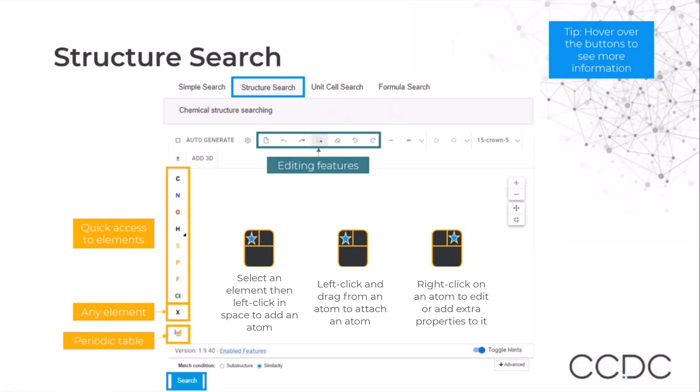Using a right-handed mouse, if we left click in the space, we place the atom. If we left click and drag from an atom, we can attach another atom bonded to that. And if we right click on an atom, we can edit it or add extra properties to it.